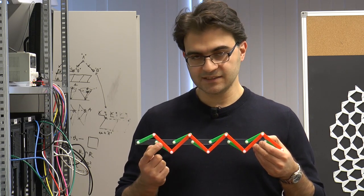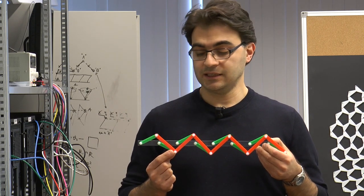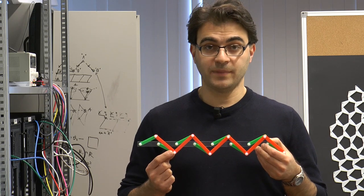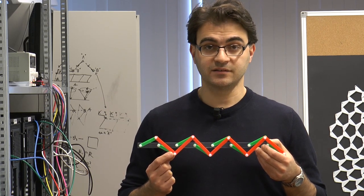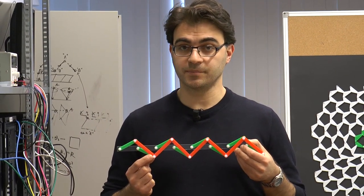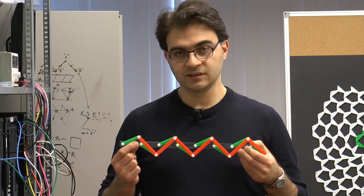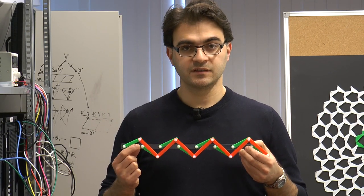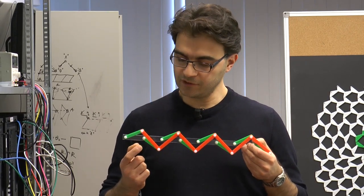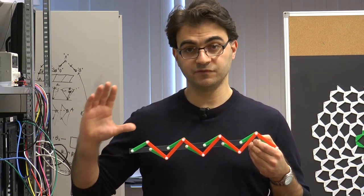If you replace the rigid bars by springs, you obtain exactly a structure that was analyzed recently by Kane and Lubensky to point out some similarities between vibrational modes in classical systems and electronic states in topological insulators. One of their key findings was that this structure has a gapped vibrational spectrum. If you replace the springs by rigid bars as we did, you push the amplitude of the gap to infinity.